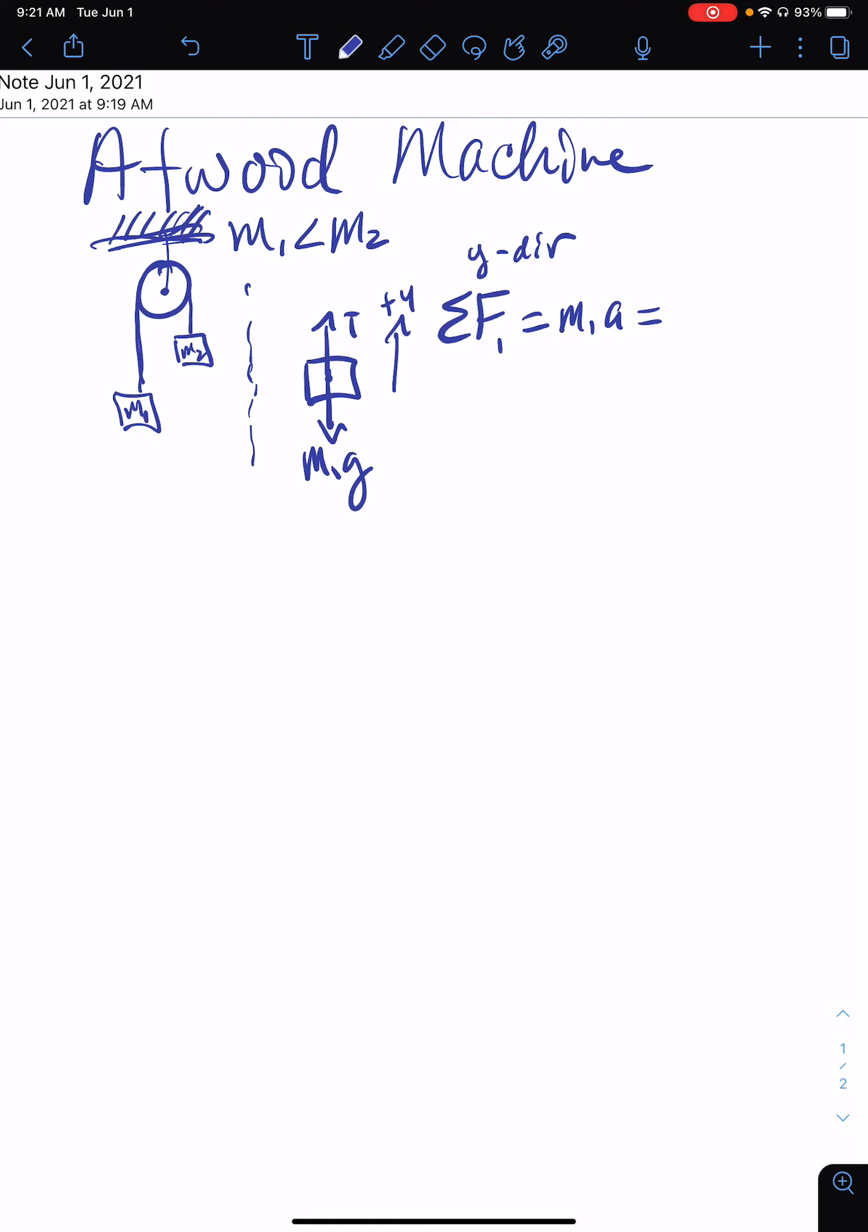So the sum of the forces on m1 is m1a, which equals the positive one minus the negative one. So T, the tension up, minus m1g. I'm going to put another little dash line because it's important that we—well, let's draw the other one.